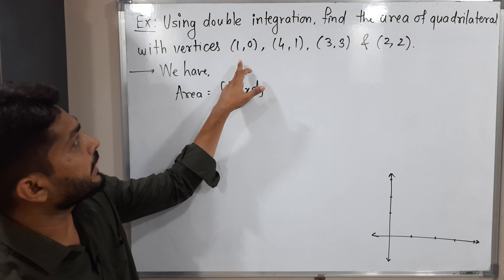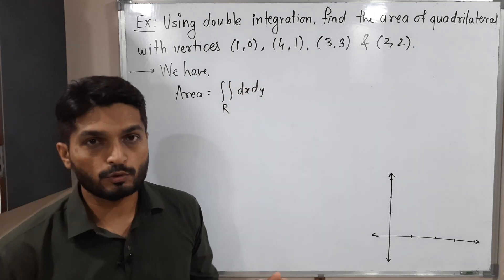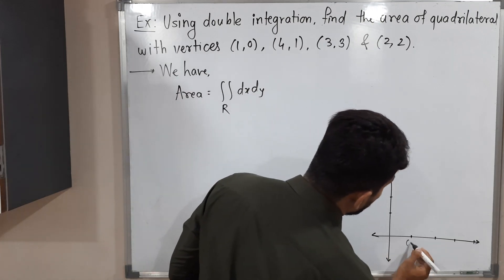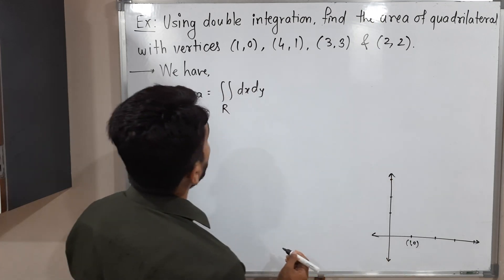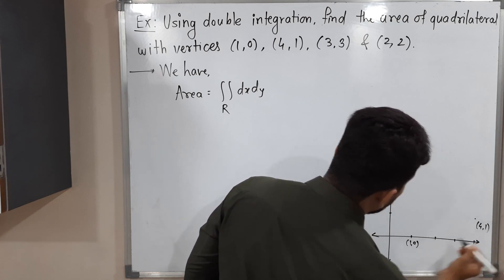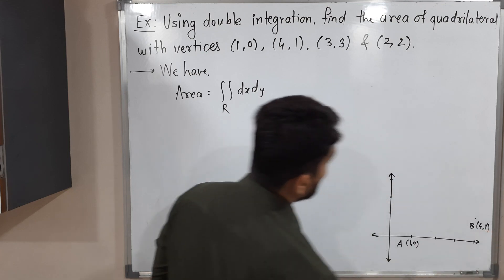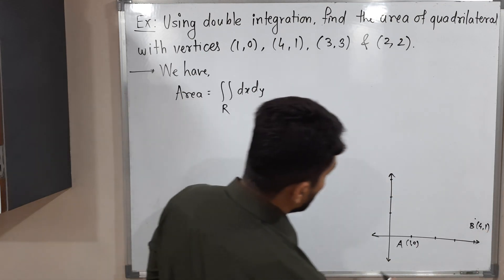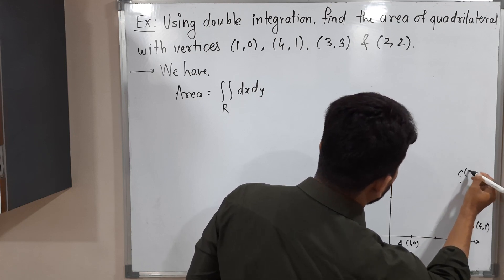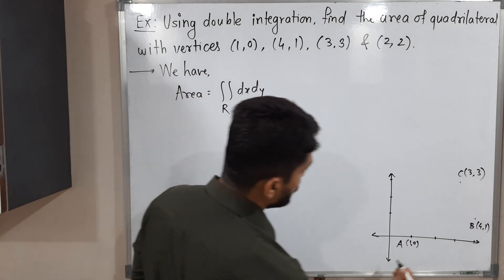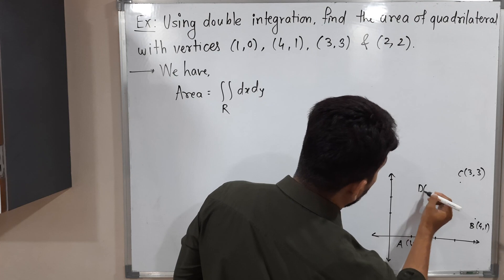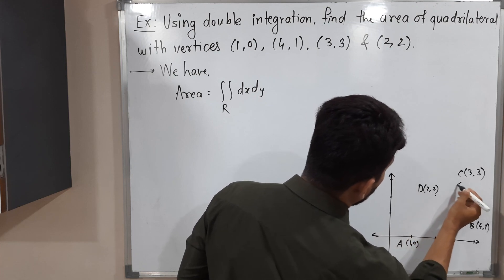We have a quadrilateral with four vertices. The first point A is (1, 0), the second point B is (4, 1), the third point C is (3, 3), and the last point D is (2, 2). Let us join them to get the quadrilateral.